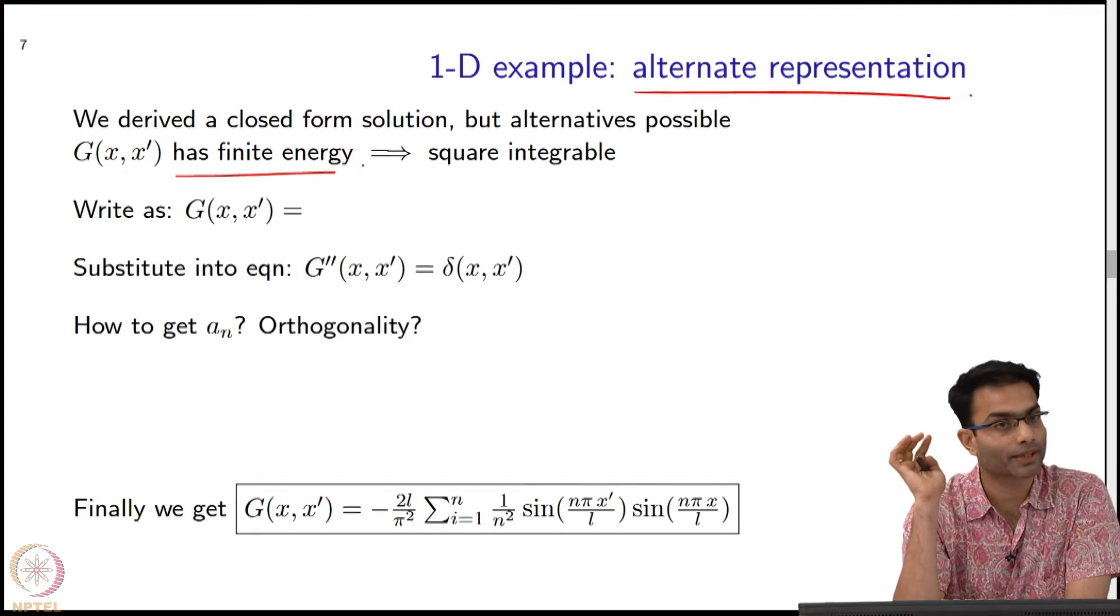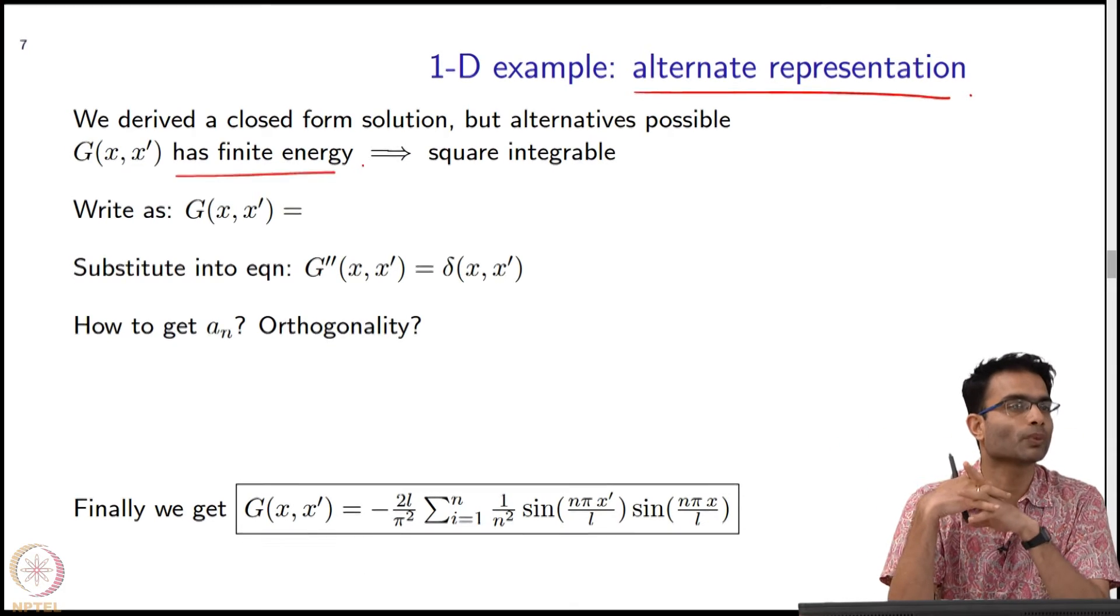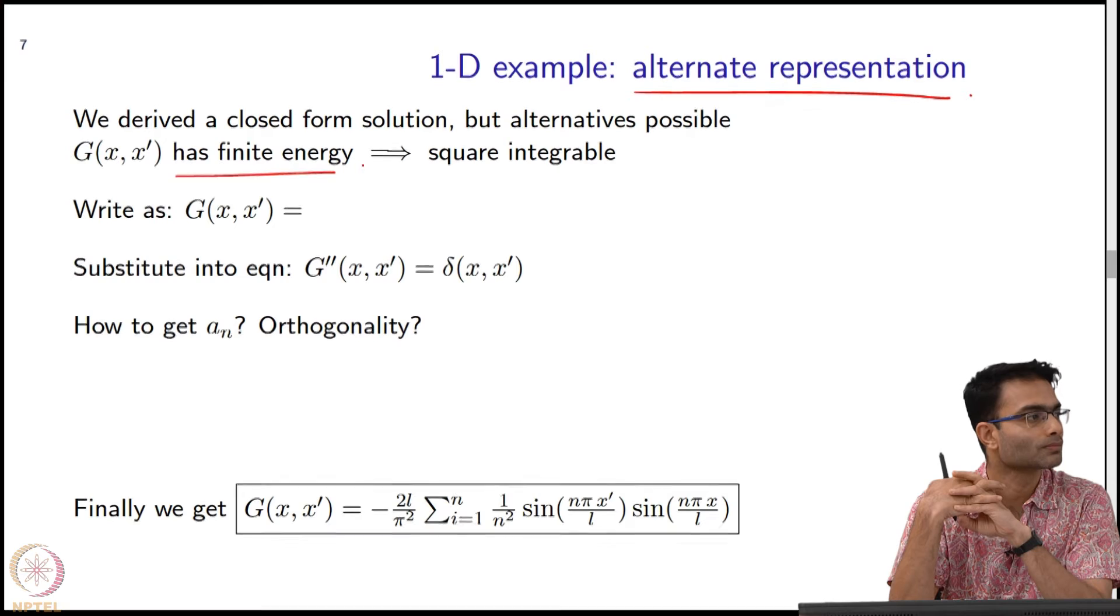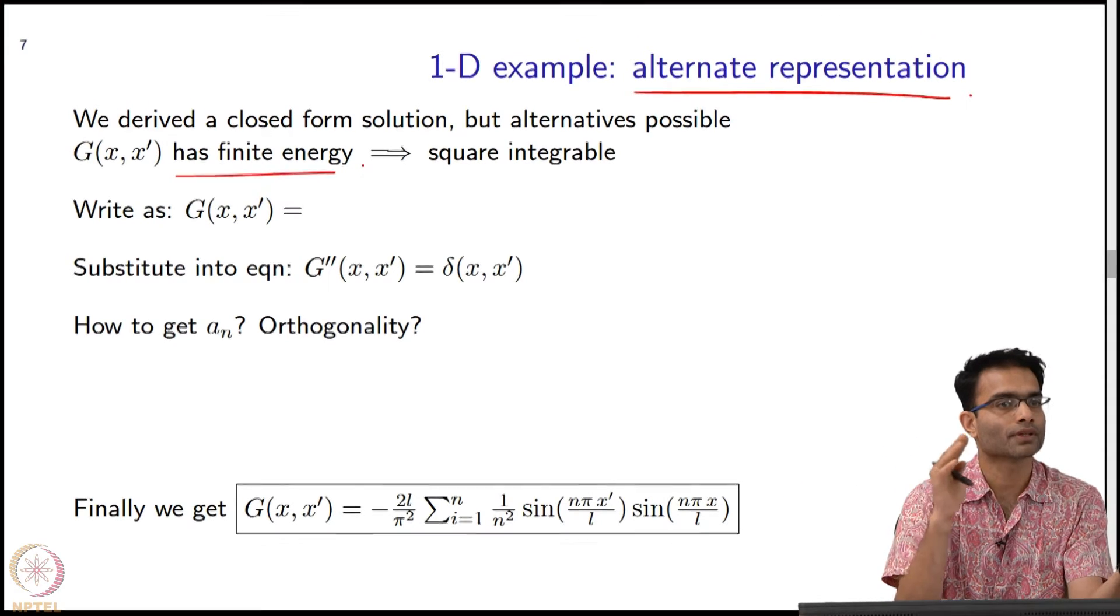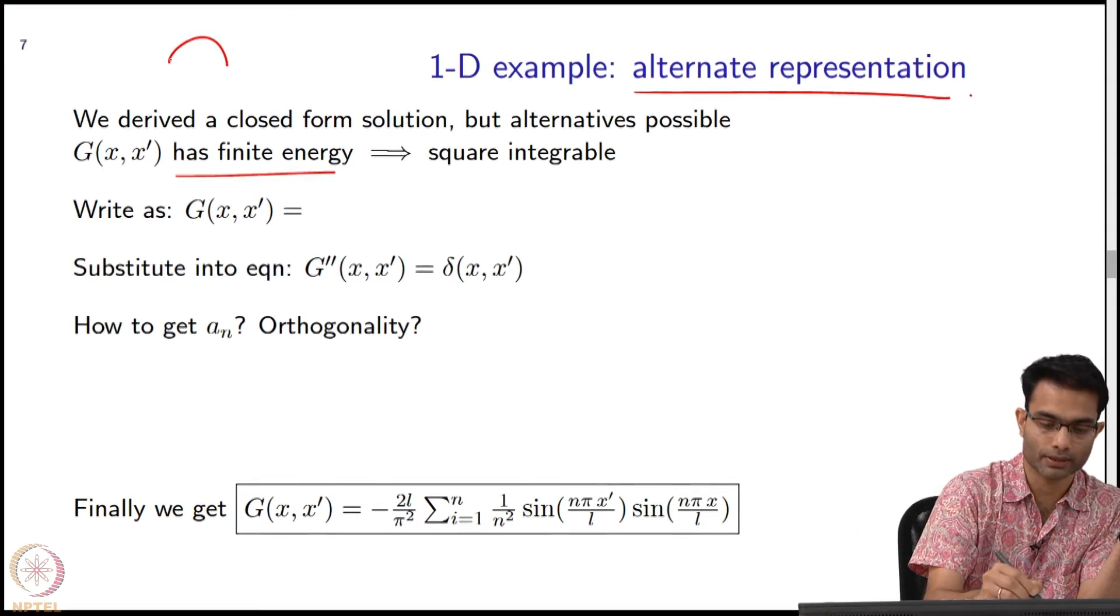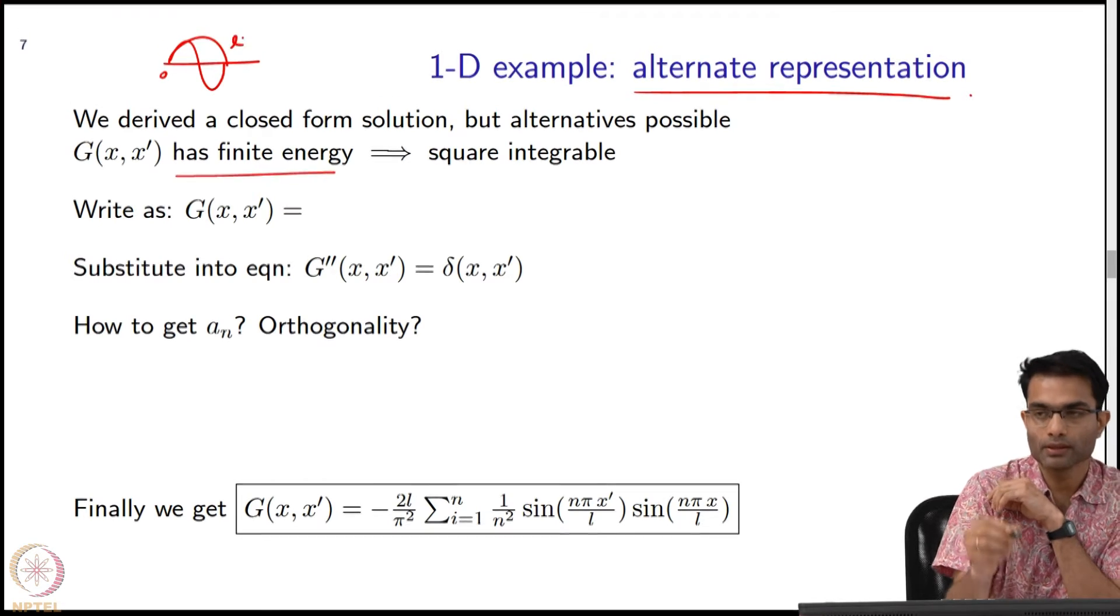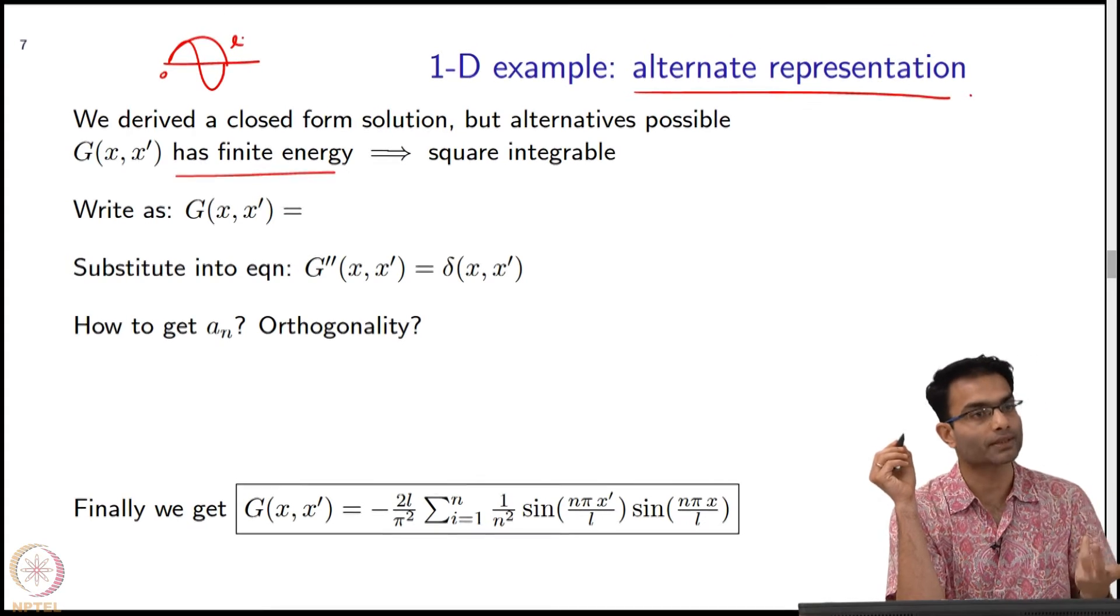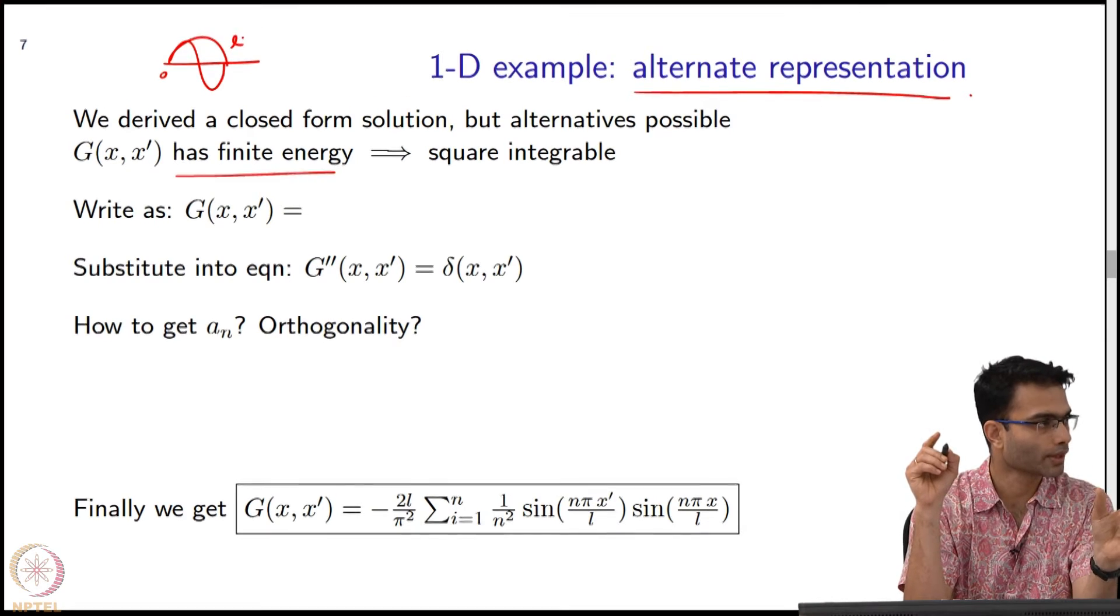What is a nice property of square integrable signals? Over a closed domain 0 to L, what is one possible way of writing this g? Can I write it as a Fourier series? Over the domain 0 to L, the signal has finite energy, so it should be representable by a Fourier series—a linear combination of sines and cosines. By looking at the boundary conditions, they will only be sine terms.